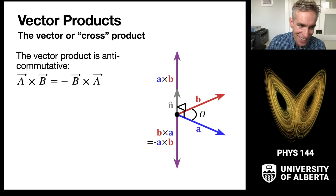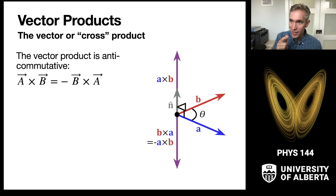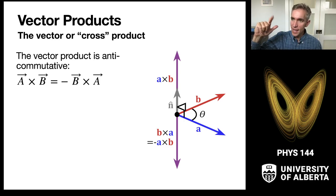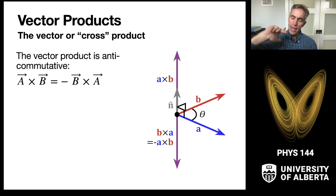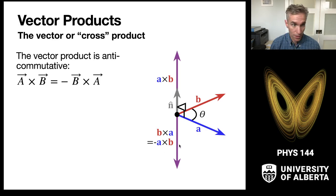The vector product is also anticommutative — I warned you this was coming. If you switch the order of the vector multiplication, you introduce a negative sign. So if a × b points upward, then b × a points downward — the opposite direction. That's the difference between a × b and b × a in our coordinate system.